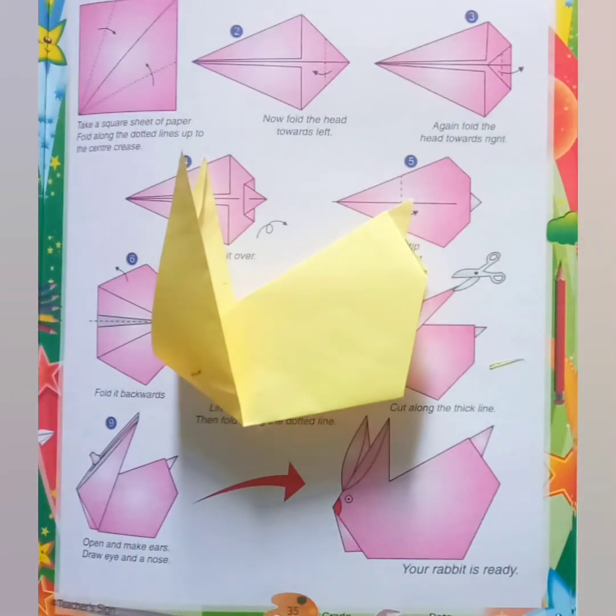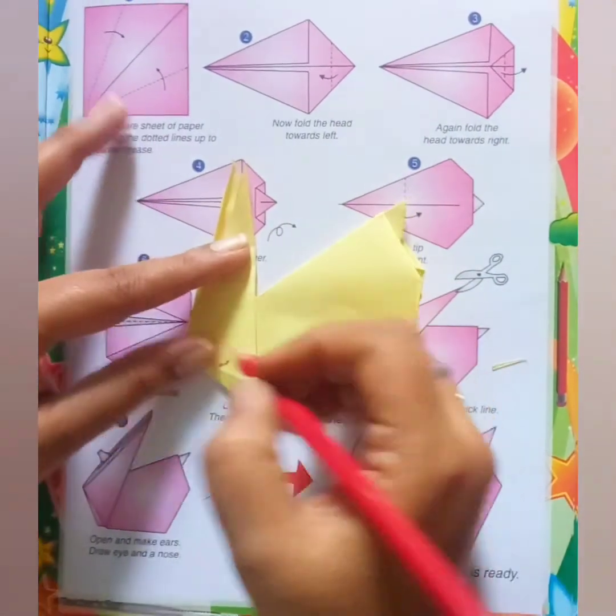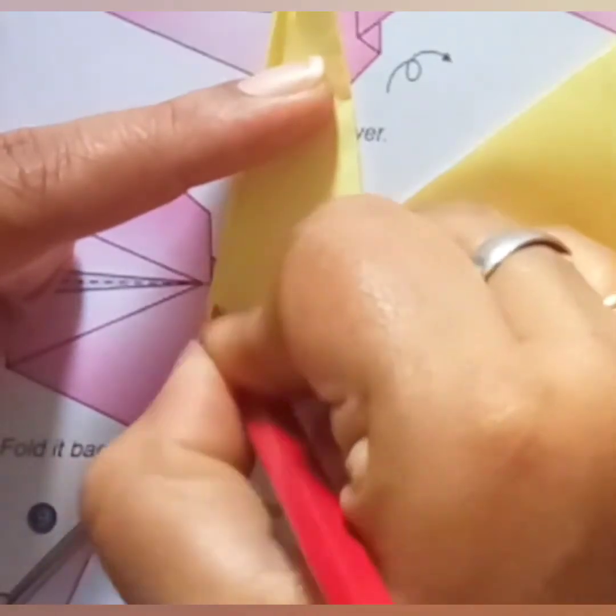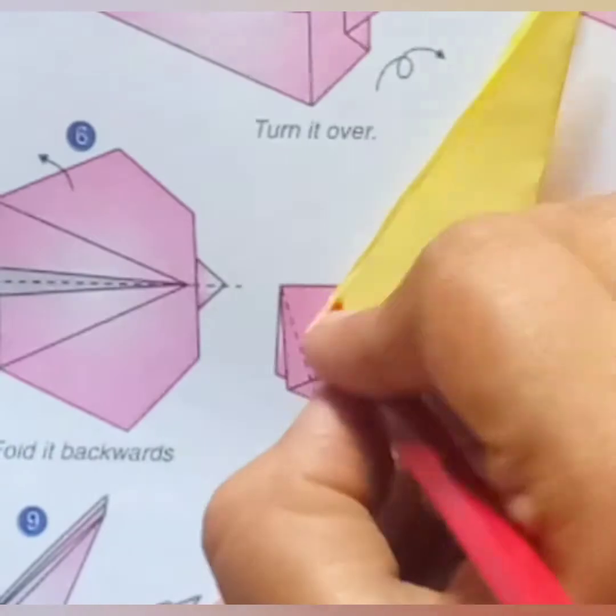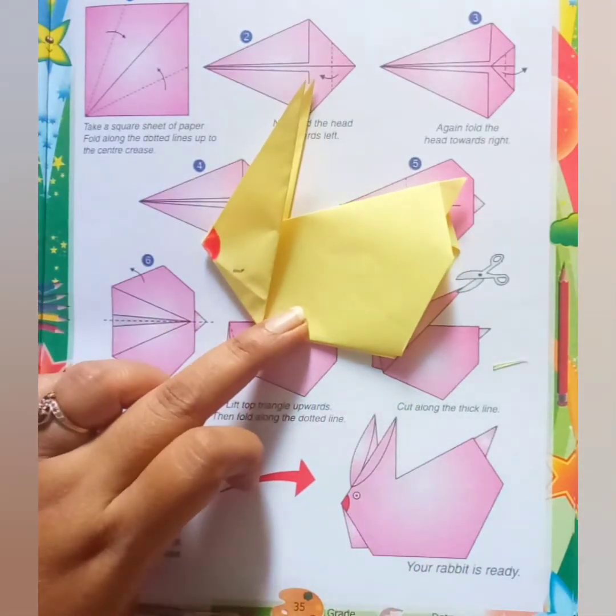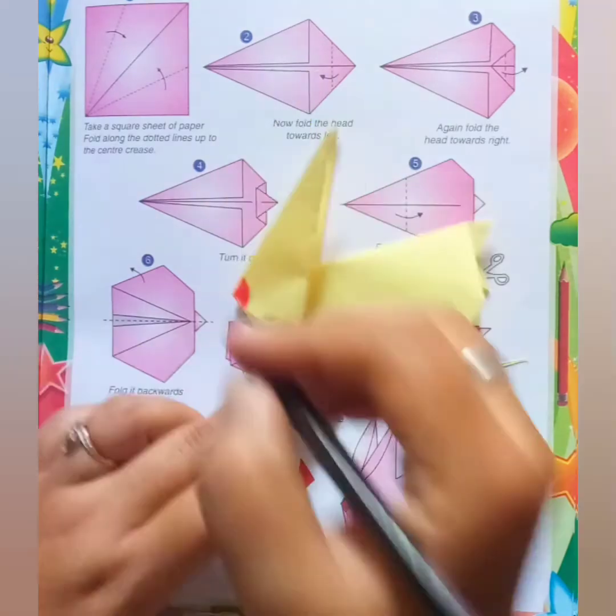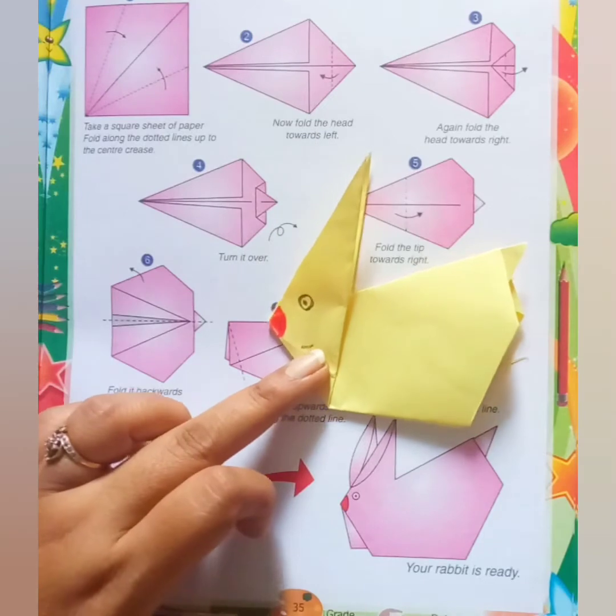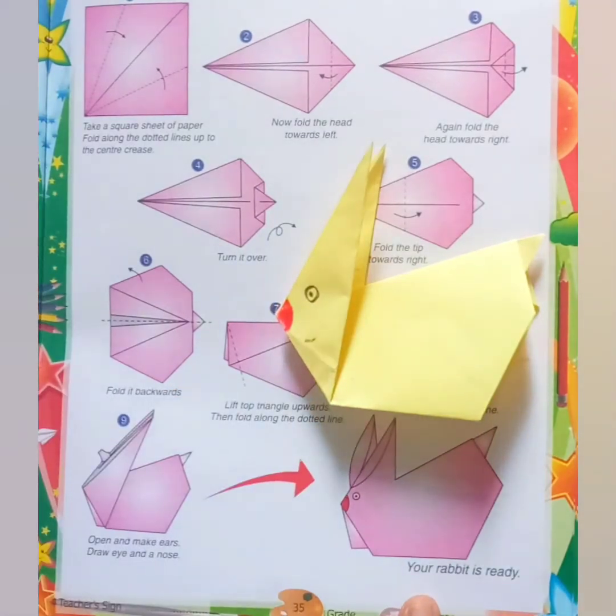Now with the pencil color, I am making the mouth of rabbit and make the eye with black pencil like this. Now our rabbit is ready.